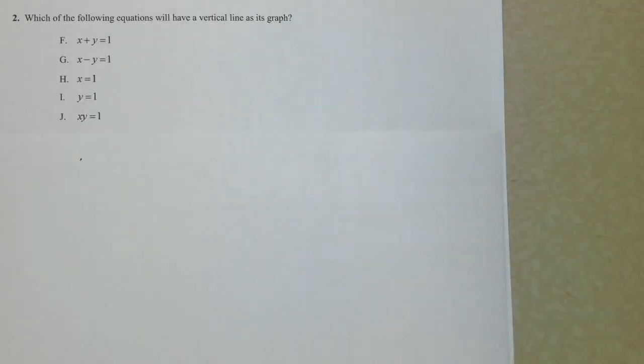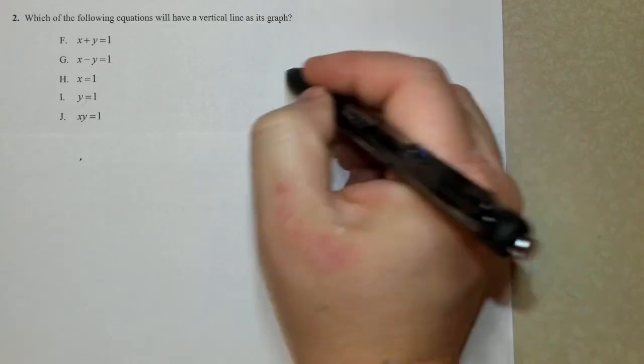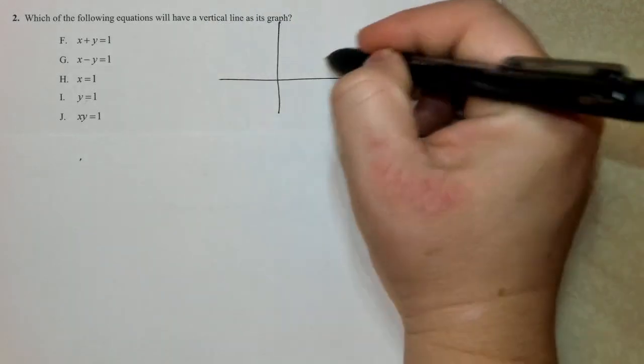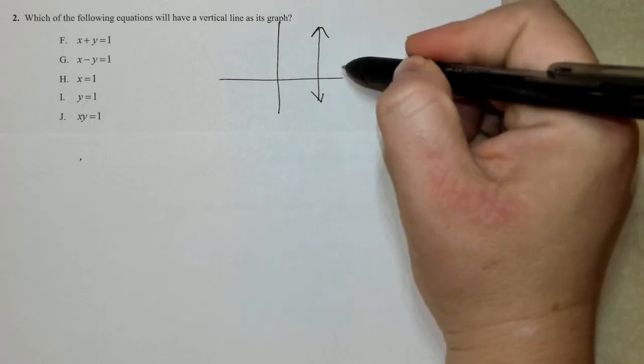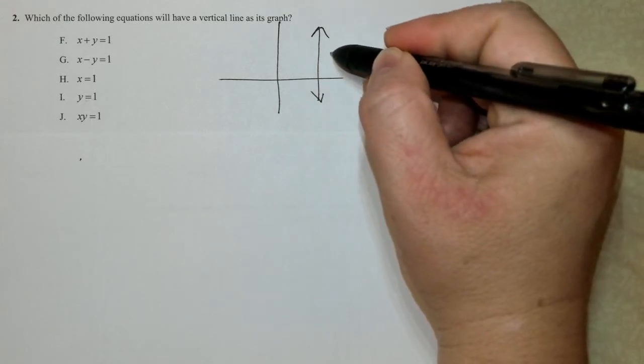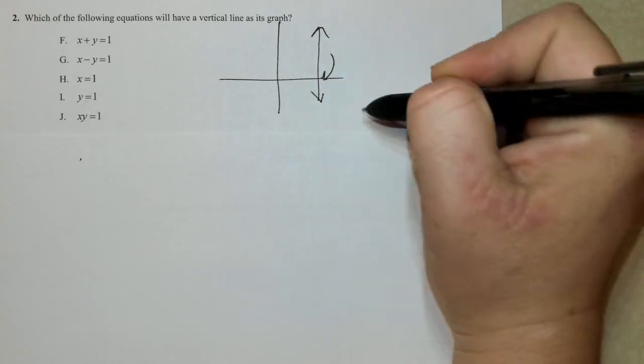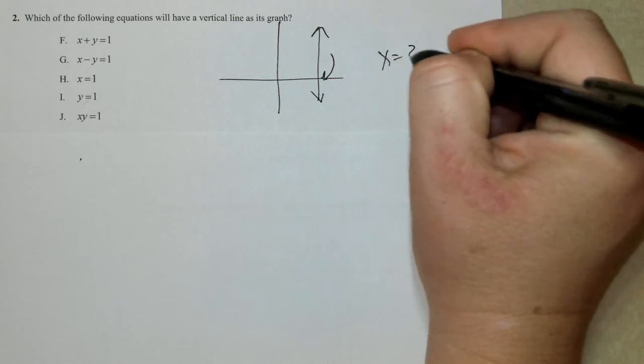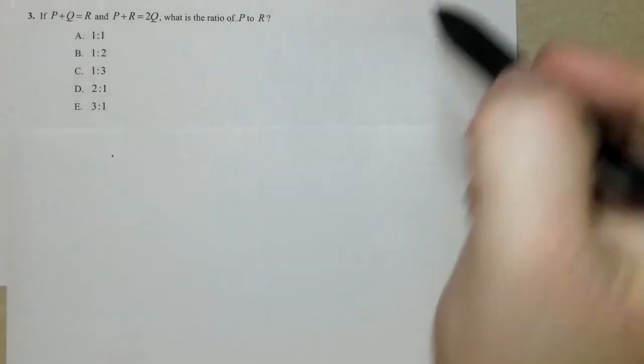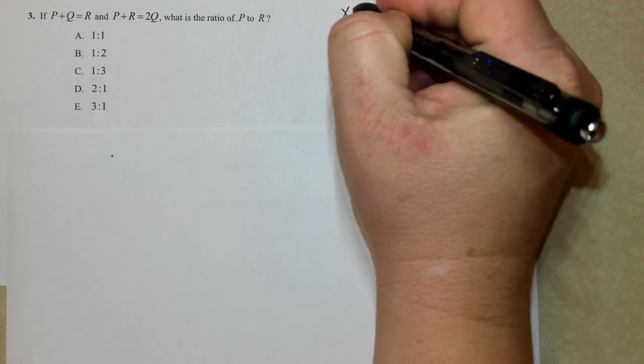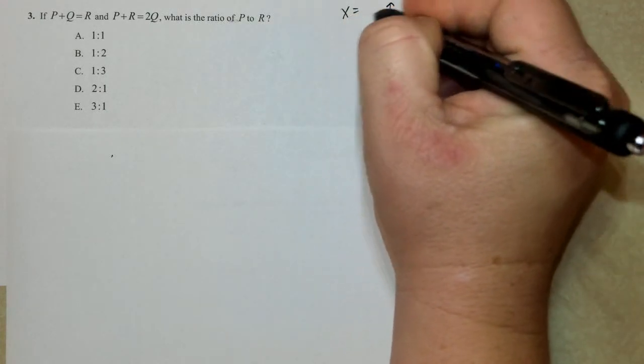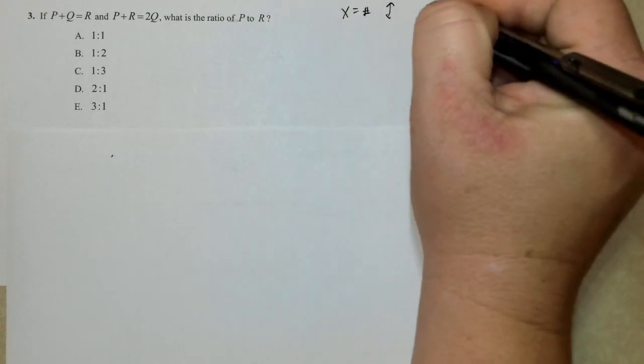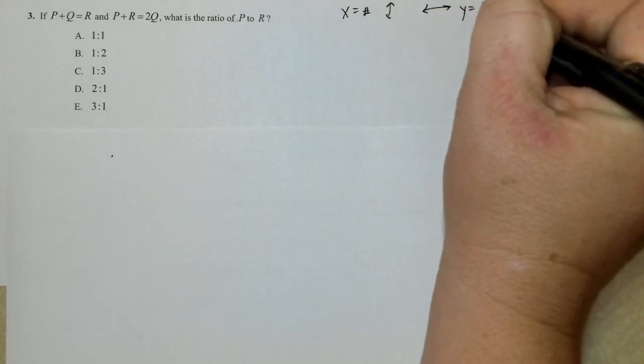Which of the following equations will have a vertical line as a graph? So I'm just going to do a little graph here. If it has a vertical line, it looks something like this. Vertical lines are always going to cross through the x-axis. So it's going to be x equals some number. A vertical line will always be x equals some number. A horizontal line will always be y equals some number.